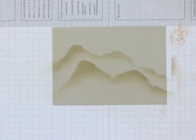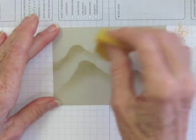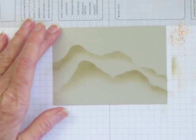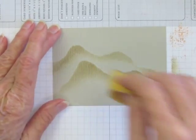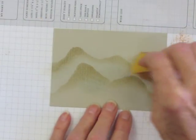And that's it. It's really simple. To get that misty look I'm going to sponge lightly with some Soft Sky in the light areas and above the mountains.